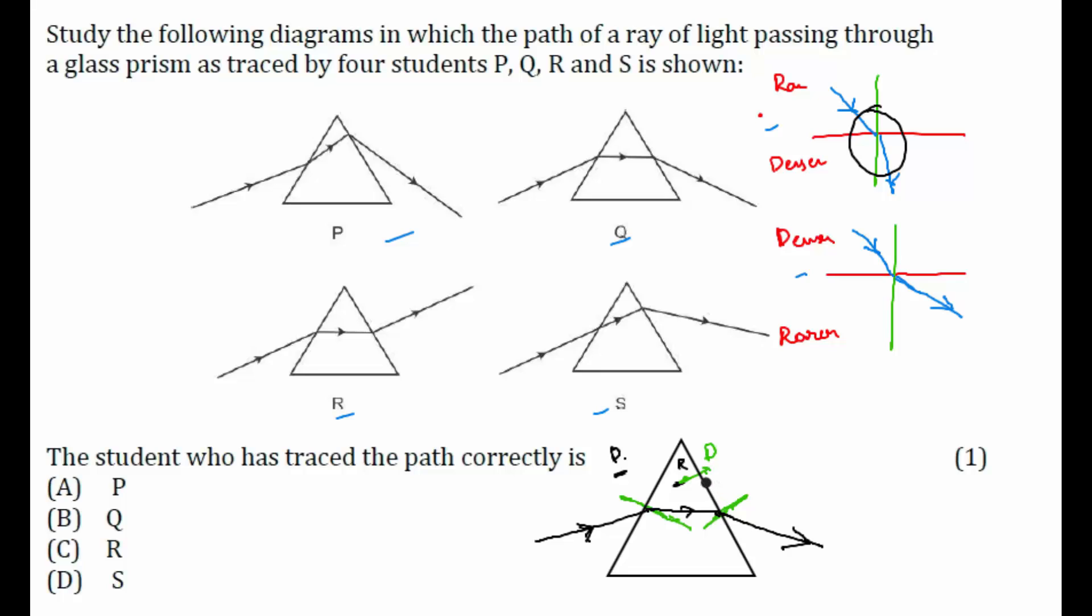So which student has traced the path correctly? Not P, right? Yeah, Q. Q is correct, R is wrong, and S is also wrong. Because there is no refraction happening at this point, so Q is the correct option, which is B.